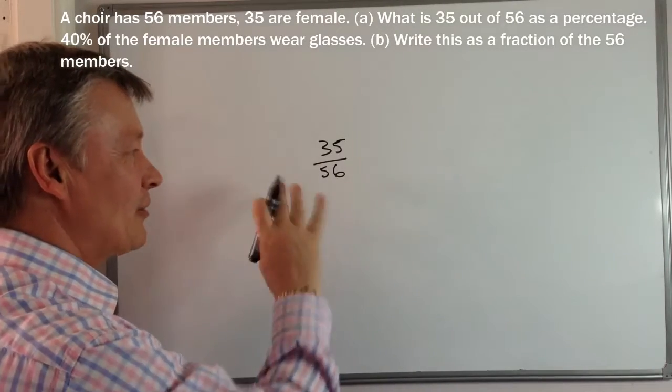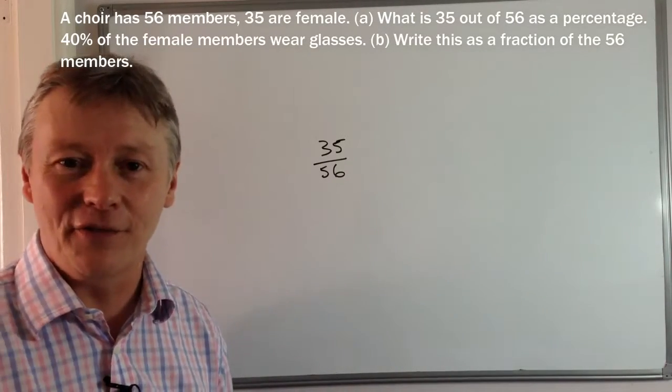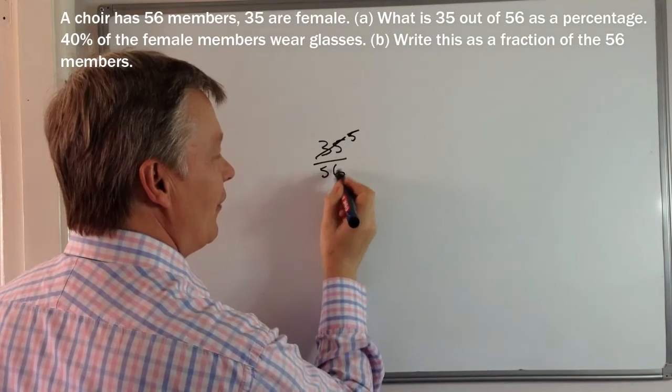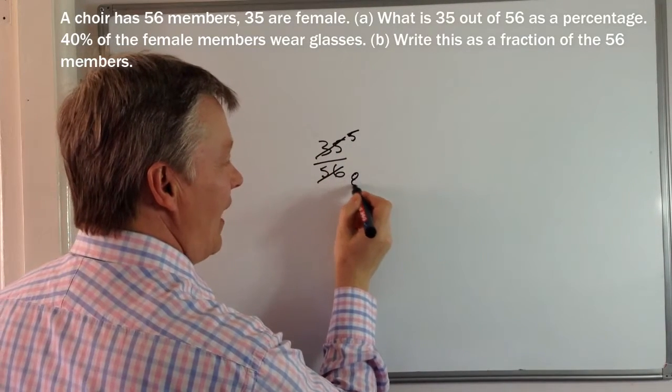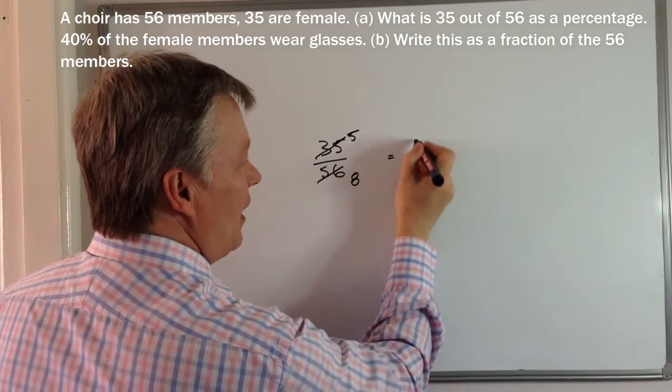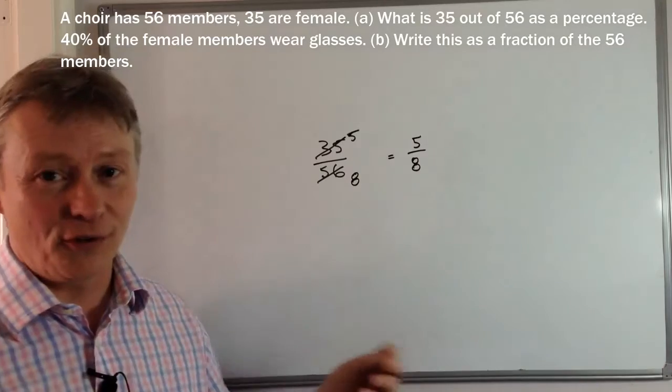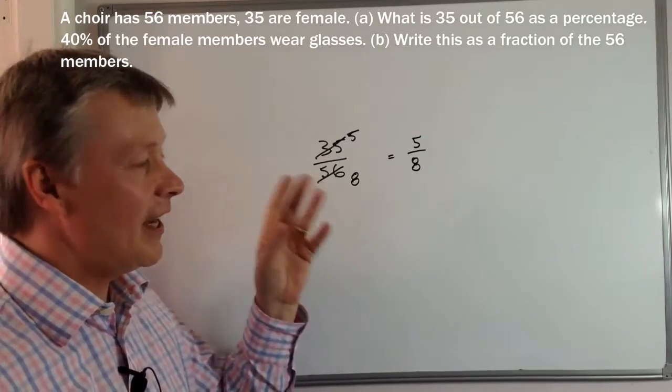Okay, so 35 out of 56. Well, that's fine. I can divide through by seven. So that becomes five and that becomes eight. So actually what we're saying is five eighths of the congregation of the choir is female.